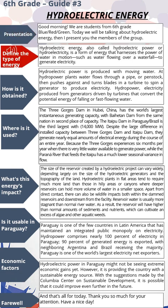Define the type of energy. Hydroelectric energy, also called hydroelectric power or hydroelectricity, is a form of energy that harnesses the power of water in motion, such as water flowing over a waterfall, to generate electricity.